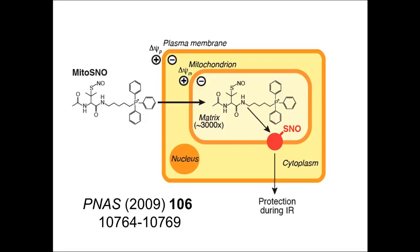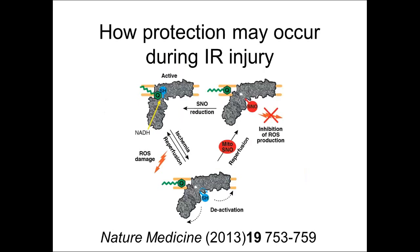The idea was that we could add MitoSNO during the reperfusion phase by injecting it into the patient upon reperfusion, and thereby damp down this burst of ROS. When we injected MitoSNO into a mouse model of a heart attack, we did get extensive protection against this burst of ROS, and we were able to show how that was occurring.